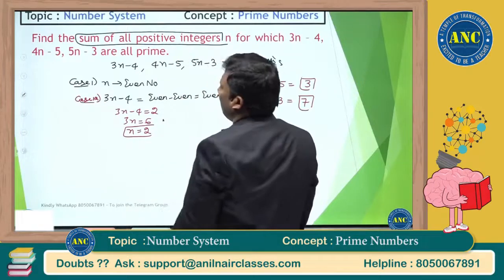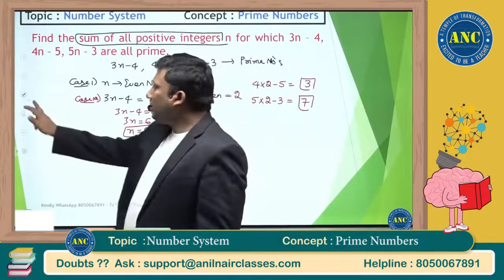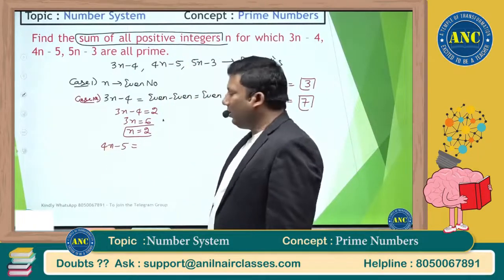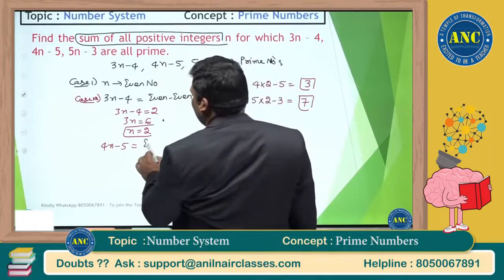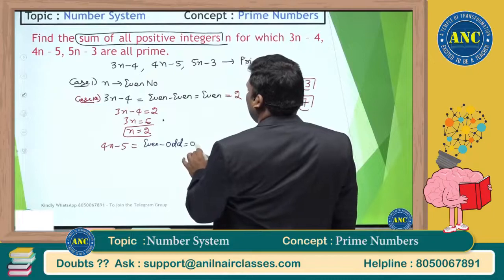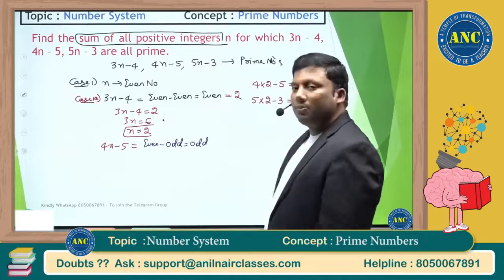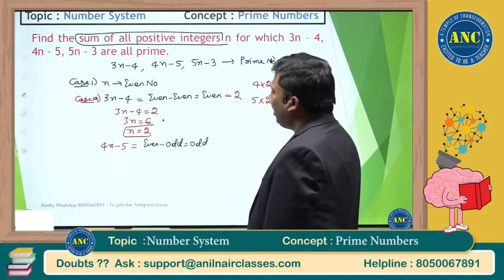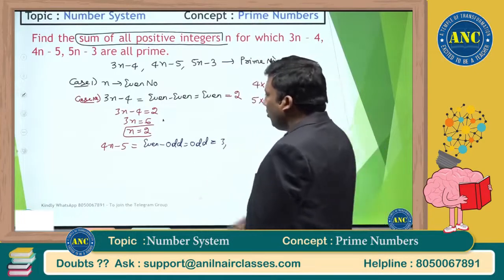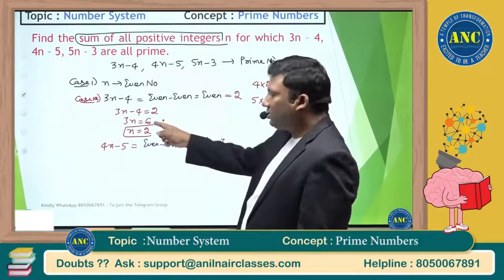Now let's check: if 4n minus 5 is prime and n is even, 4n is even and 5 is odd, so 4n minus 5 is odd — that's fine, it can be any odd prime. If 4n minus 5 equals 3, then 4n equals 8 and n equals 2, the same result.